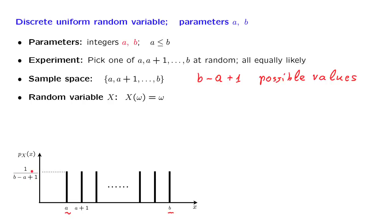What does this random variable model in the real world? It models a case where we have a range of possible values, and we have complete ignorance, no reason to believe that one value is more likely than the other.